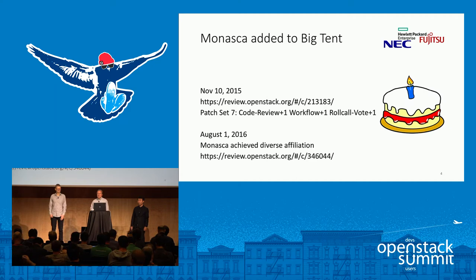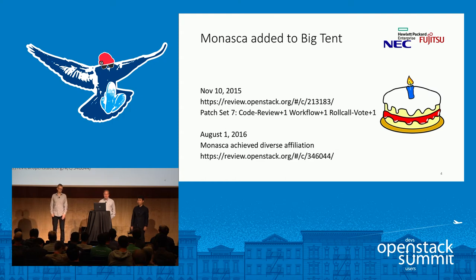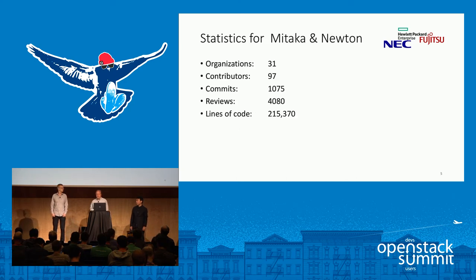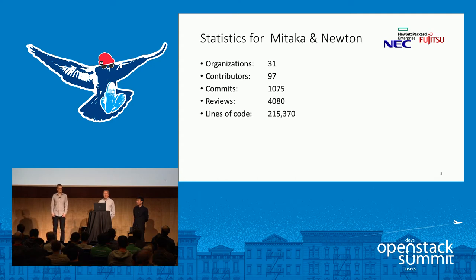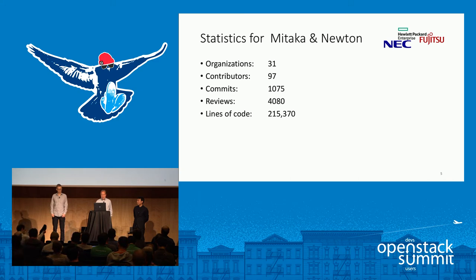It's about a year ago that Monasca made it into the OpenStack Big Tent. Since then, in addition to doing a lot of development, we've gone from a single vendor status to a diverse affiliation status, meaning multiple vendors are now working on Monasca. Some statistics from Stackalytics: 31 organizations involved, 97 contributors, 1,075 commits, 4,080 reviews, and approximately 215,000 lines of code.